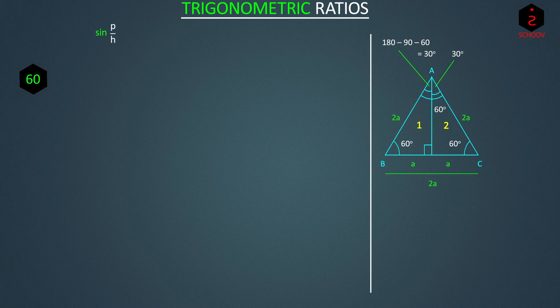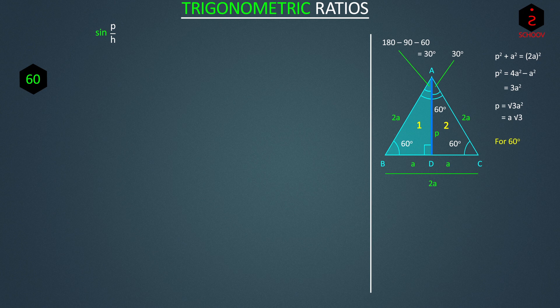Which means sides AB and AC are also 2A. Let's find AD that is perpendicular P. Our original triangle one is right angled. So P square plus A square is equal to 2A square. Which means P square is 4A square minus A square, 3A square. And hence P is root 3A square, that is A root 3. So in this triangle, for angle 60, base is A, perpendicular is A root 3 and hypotenuse is 2A.